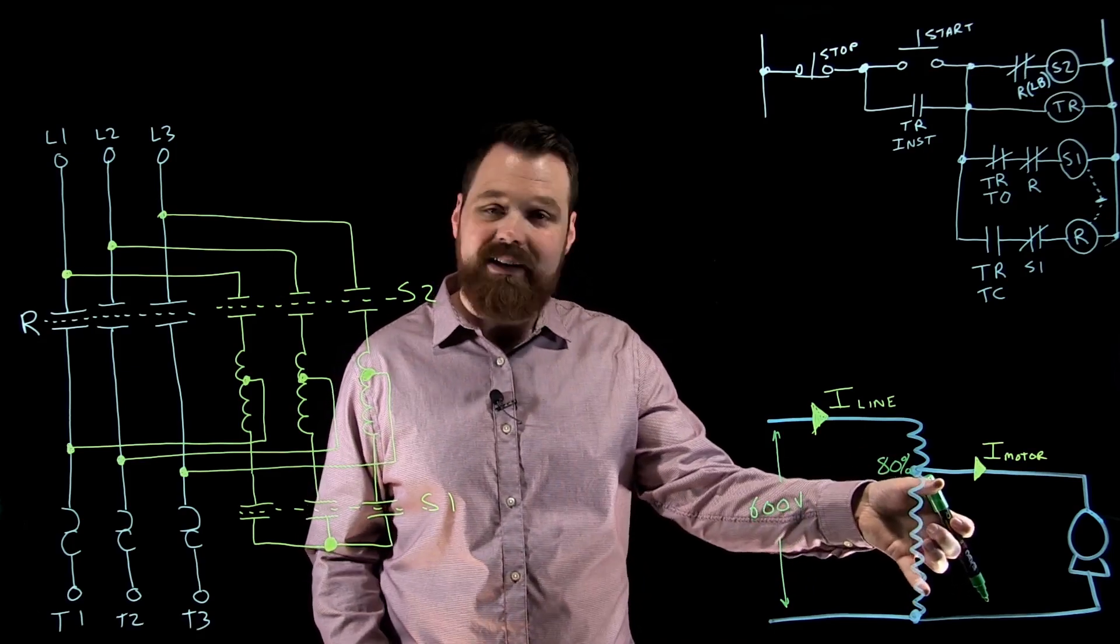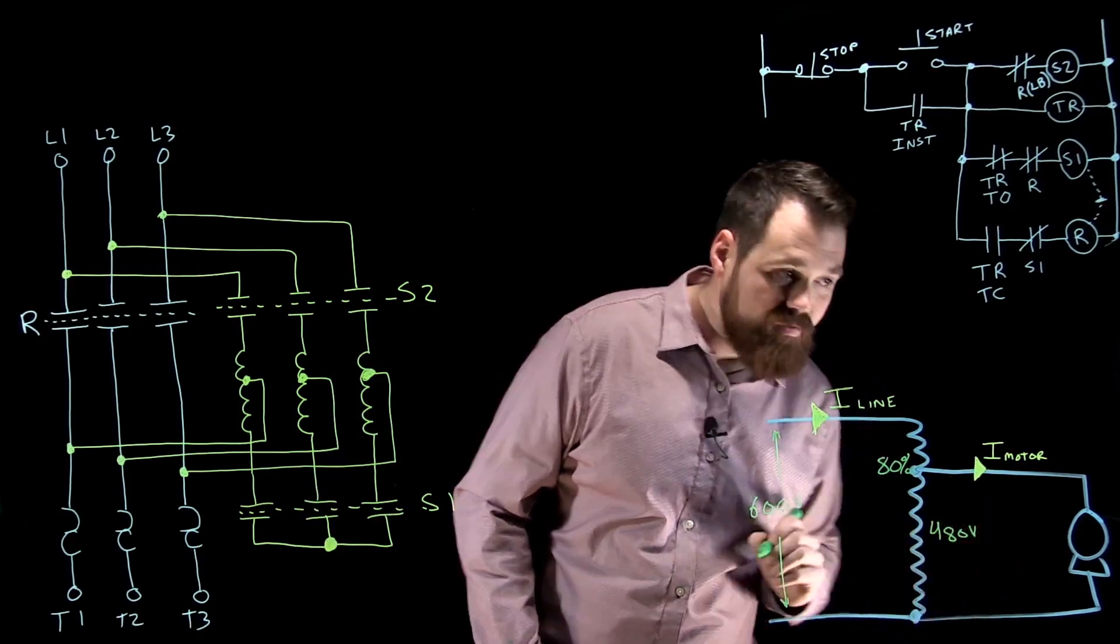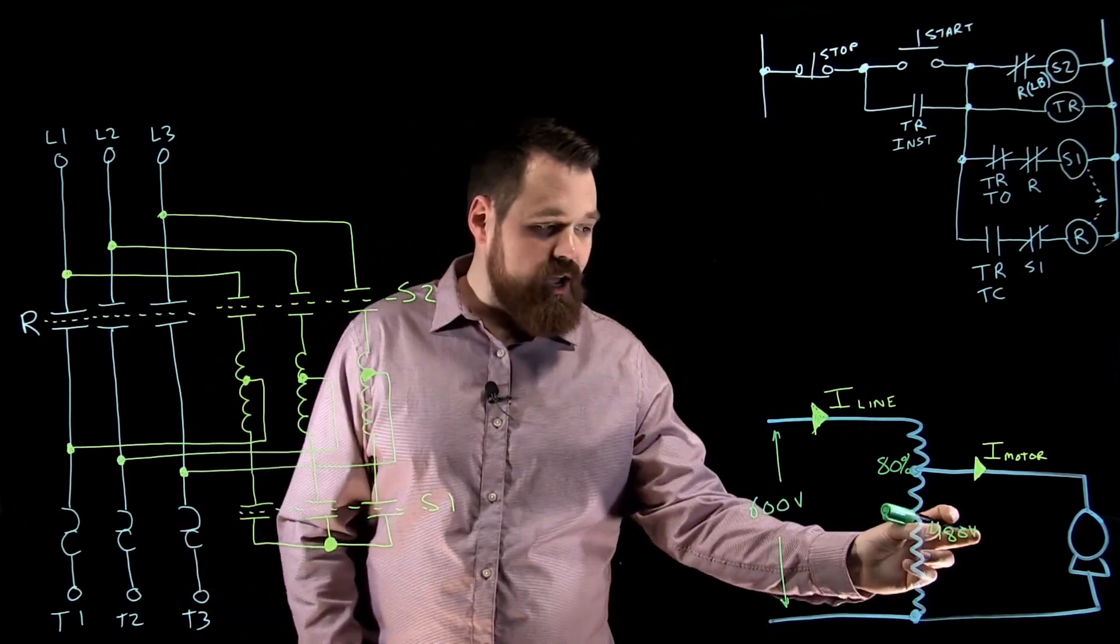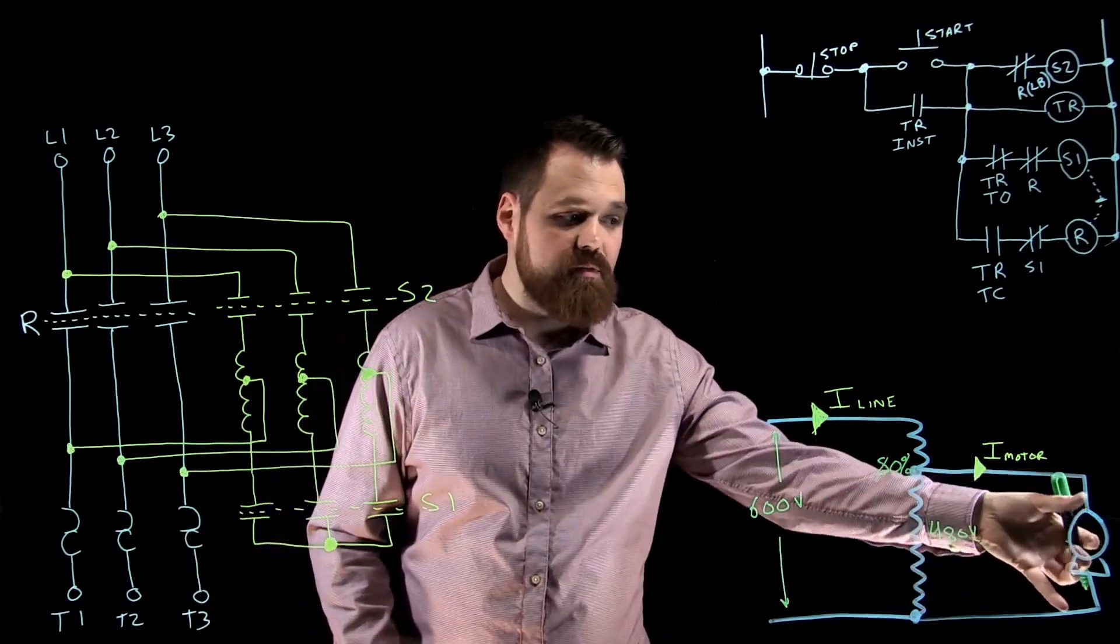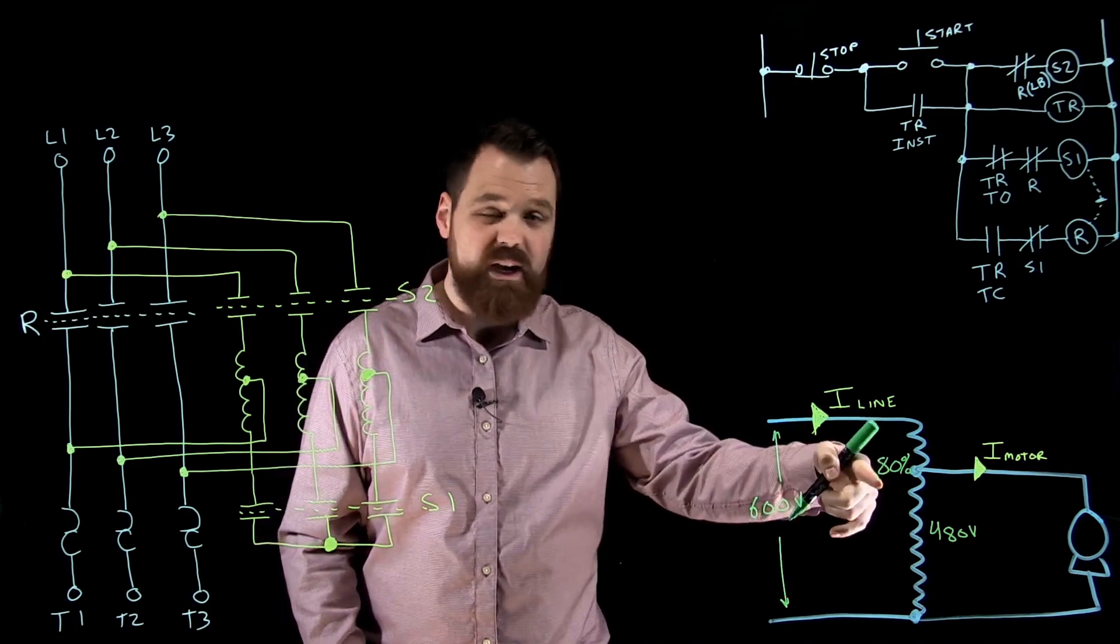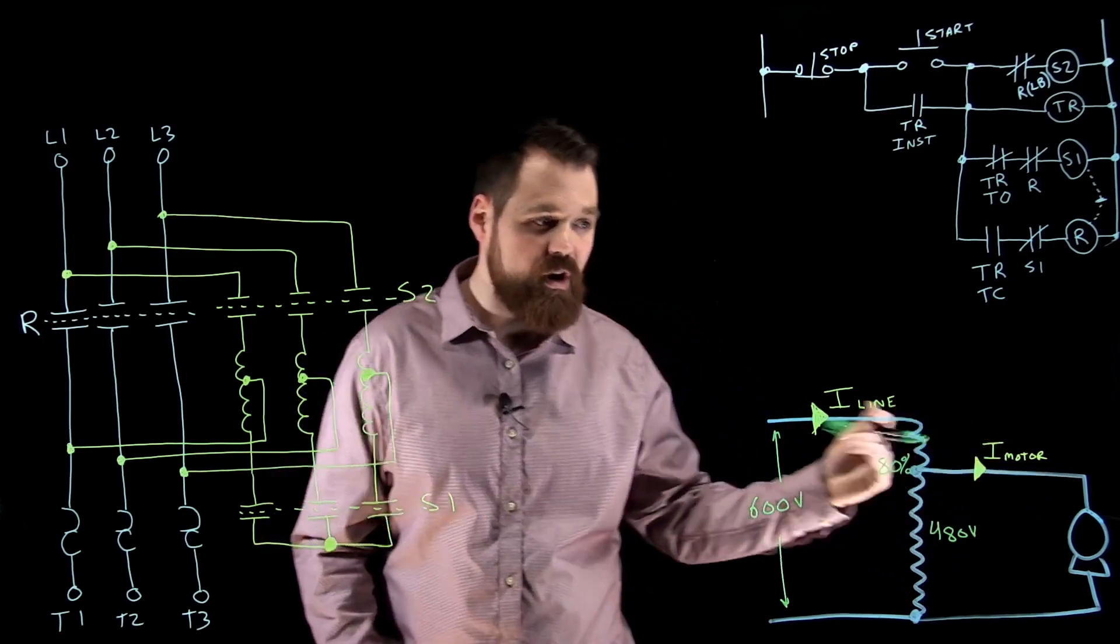If I use the 80% tap on my autotransformer, that means this winding, my common winding, is going to see 480 volts. That's my voltage that I apply to the motor. We've essentially taken the voltage, 80% tap, and applied 80% of our source voltage to the motor.